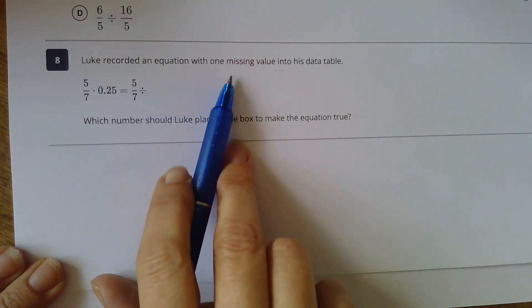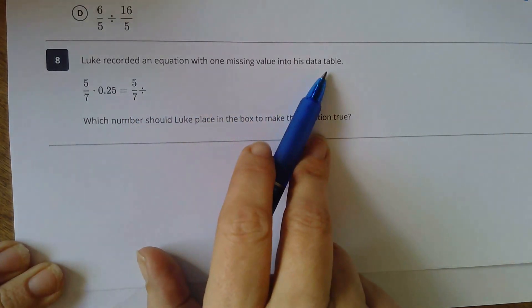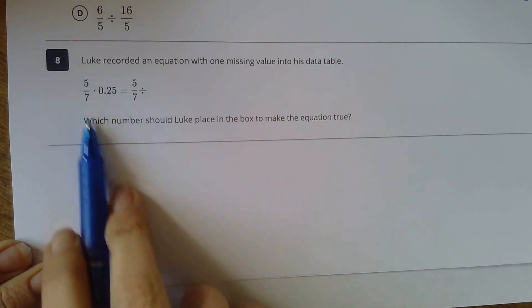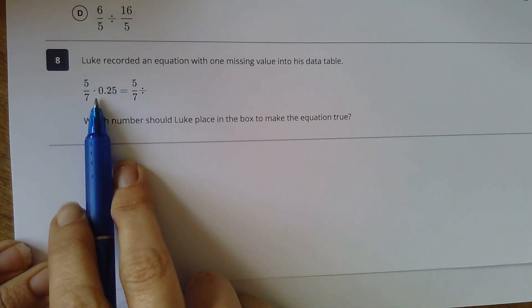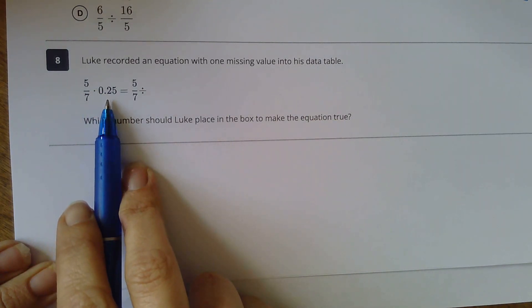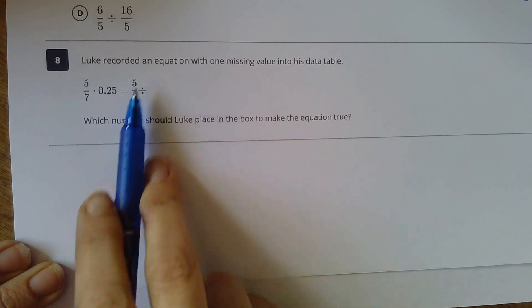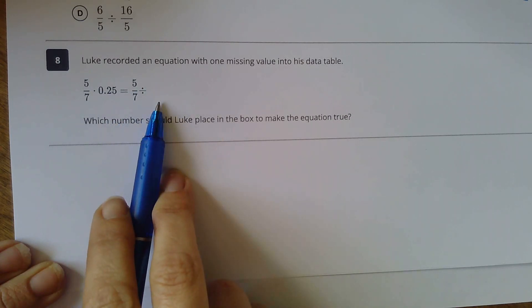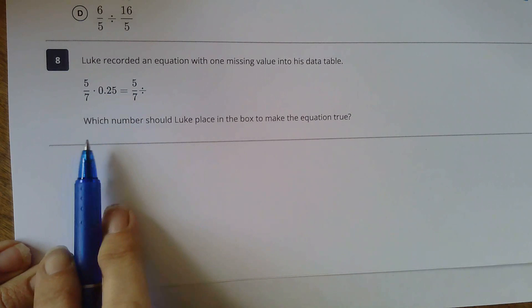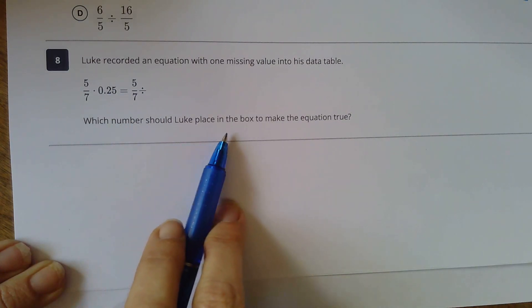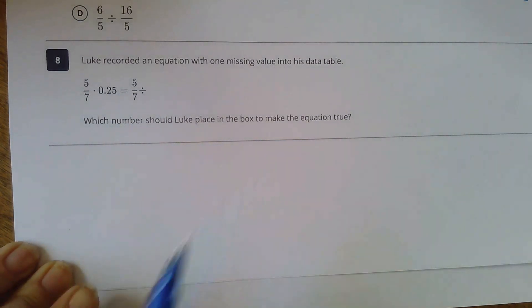Luke recorded an equation with one missing value into his data table. He has 5 sevenths times 25 hundredths equals 5 sevenths divided by, and he's missing something. Which number should Luke place in the box to make the equation true?